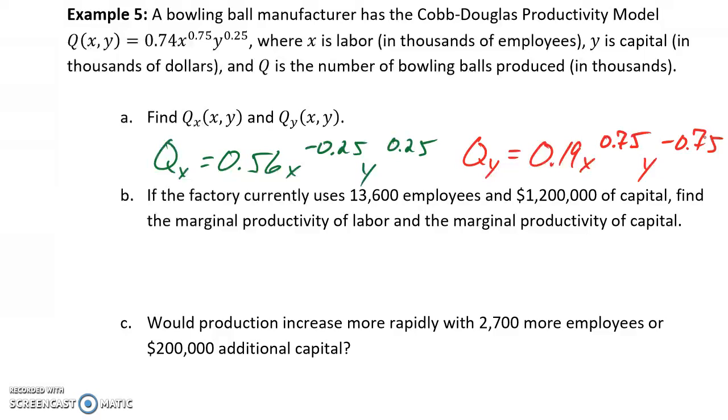If the factory currently uses 13,600 employees and $1.2 million of capital, we want to find the marginal productivity of labor and the marginal productivity of capital. To find our marginal productivity of labor, we want to evaluate the partial derivative with respect to x. In this case, when our value for x equals 13.6, since that represents our labor in thousands, and when y equals 1,200, since that represents our capital in thousands, which would yield a result of 2.